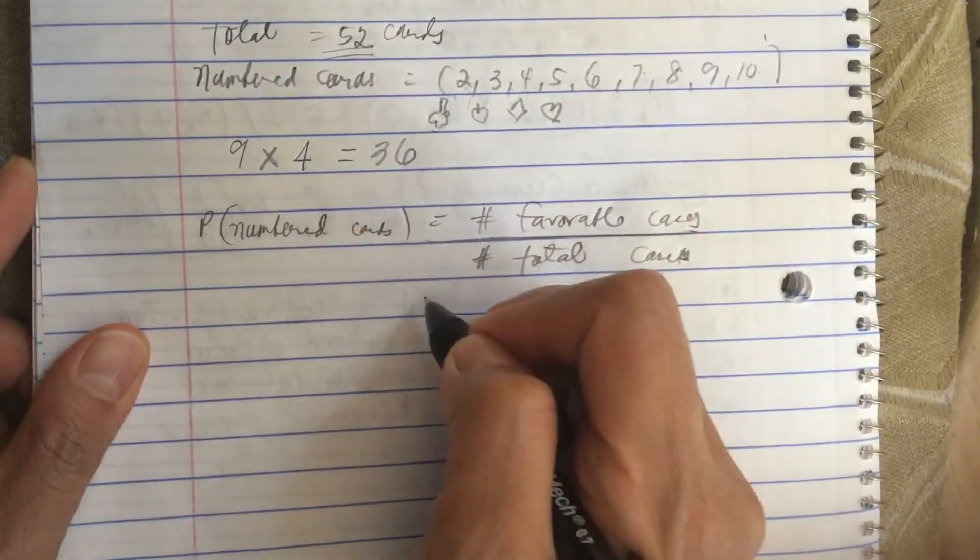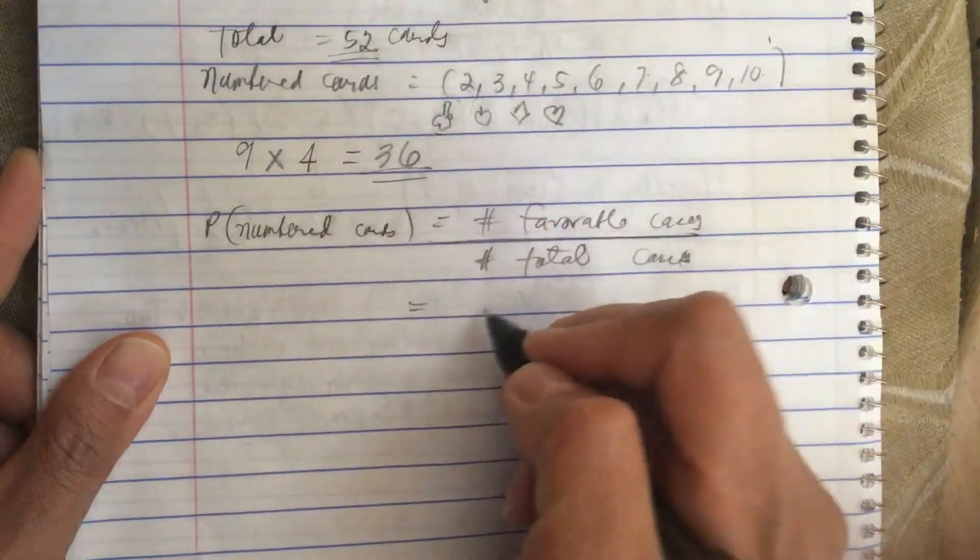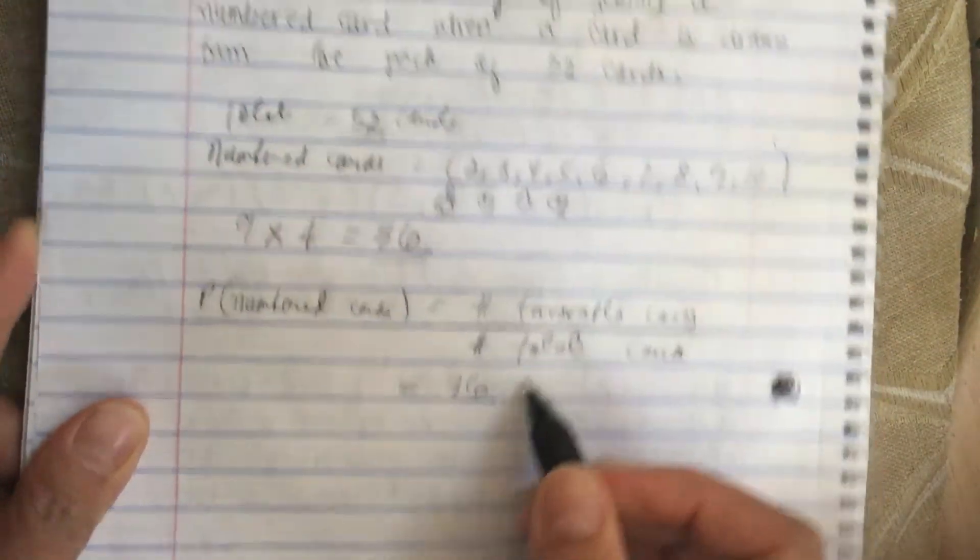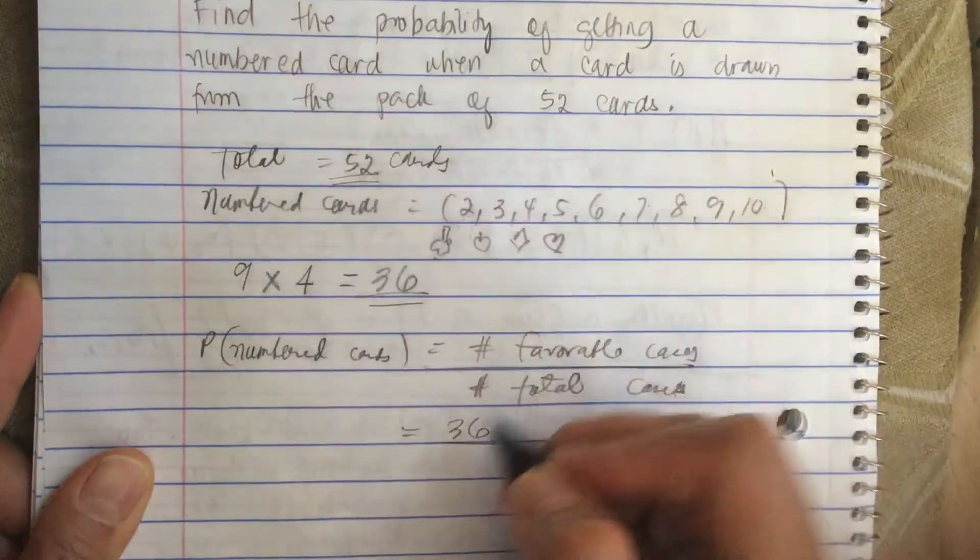So this is equal to... the favorable cases is 36, now the total number of cases is 52.